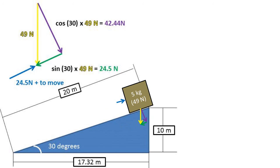We can calculate the force needed to push up the crate by taking the sine value of the angle times the force due to gravity, in this case 49 newtons. We are left with a force of 24.5 newtons.